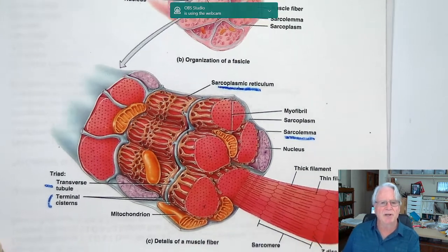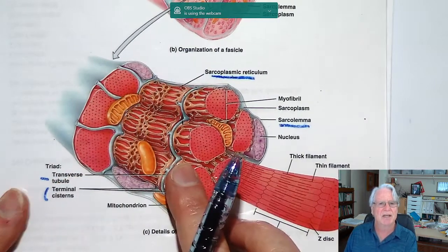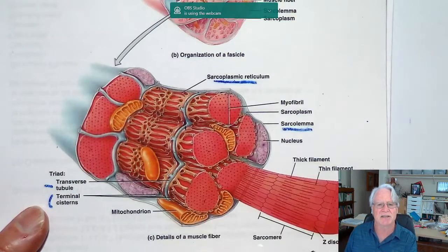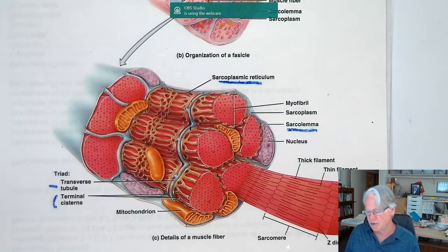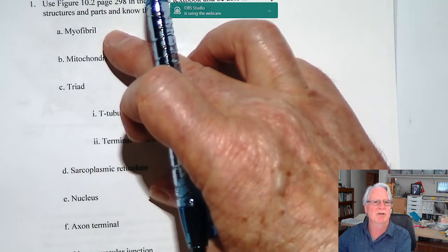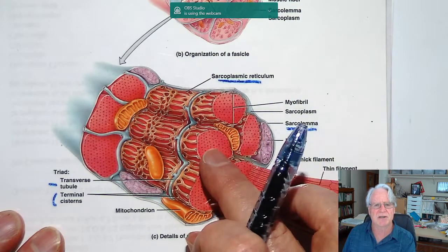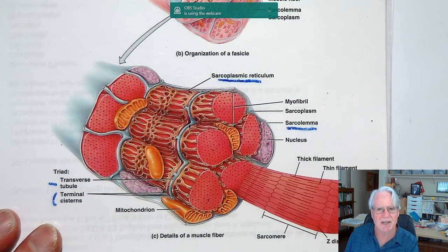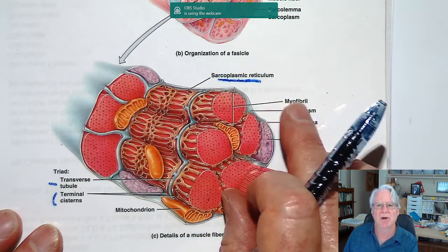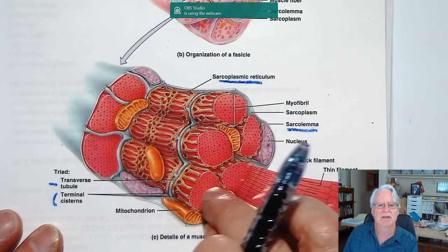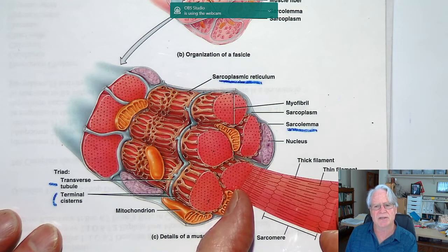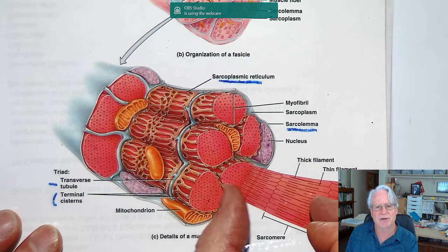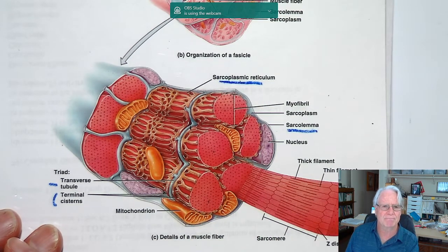Here is a typical skeletal muscle cell — this entire thing is a skeletal muscle cell. We're taking one cell out of a muscle, expanding it, and looking at the details. Starting with myofibrils: these are bundles of proteins inside the cell. When we stimulate these proteins in the right way, the myofibril will shorten, producing the shortening of the muscle and thus producing movement in your body.